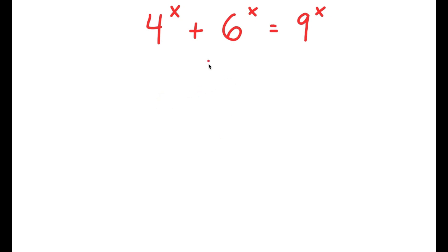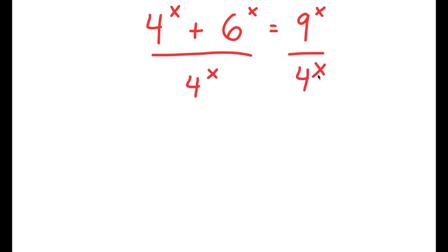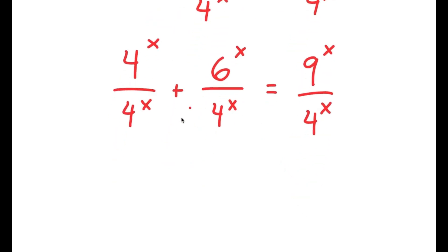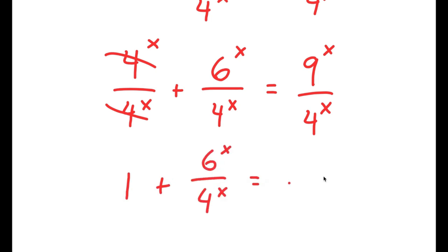In this problem, I have four to the power of x plus six to the power of x is equal to nine to the power of x. To solve this, I'm going to divide both sides by four to the power of x. So I get one plus six to the power of x over four to the power of x is equal to nine to the power of x over four to the power of x.